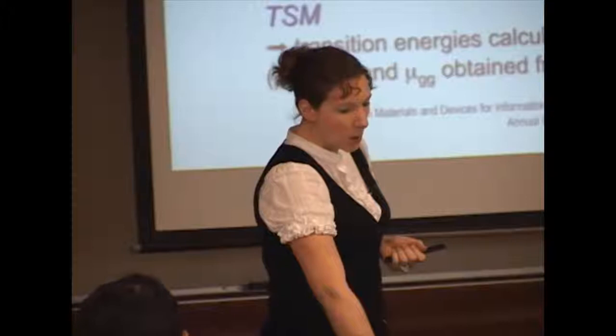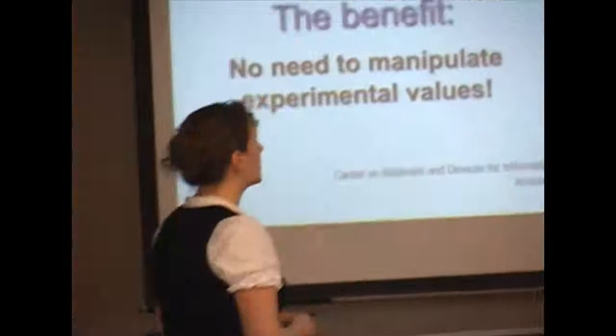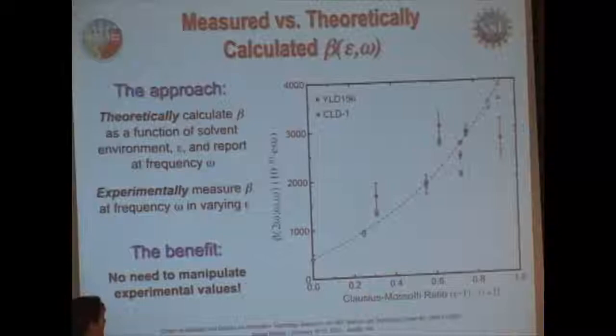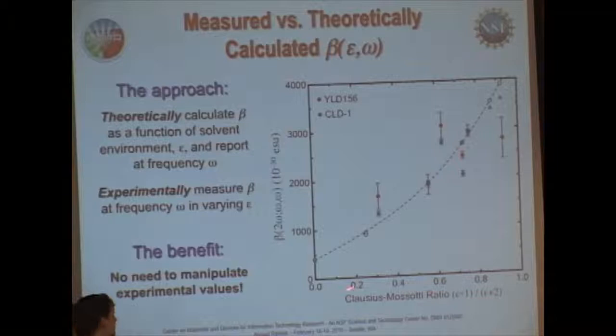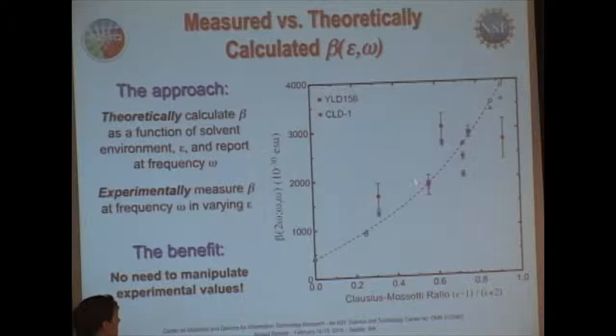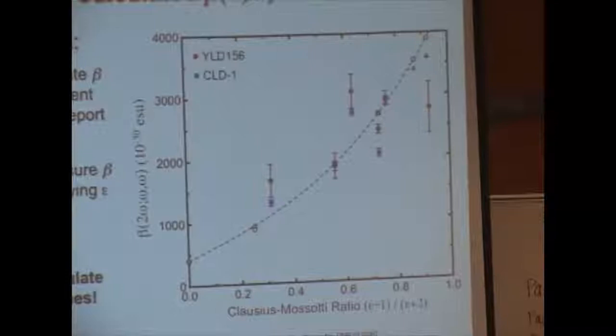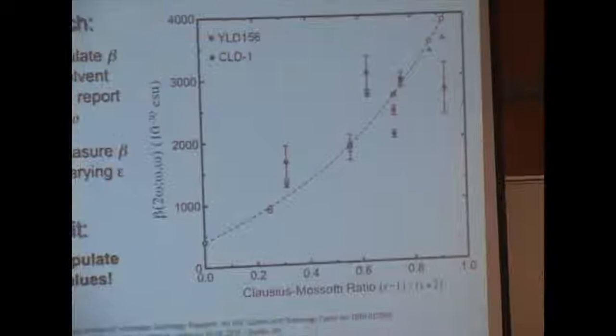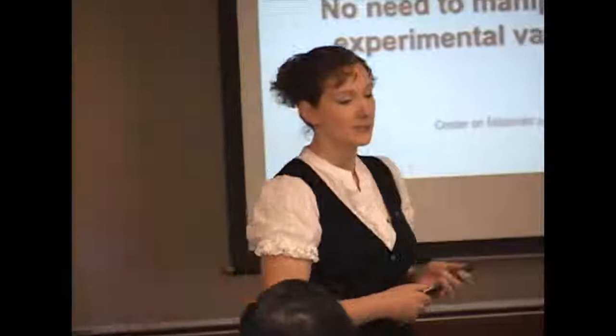Ultimately, what we want to do is be able to directly compare measured values to those that are theoretically predicted. Well, measured values of course have a dielectric dependence and also a frequency dependence. So what you see here is just that. You have calculated values shown in the black as a function of your dielectric and your hyperpolarizability. Measured values are all the colored points up there for the two systems. Important thing to note here is that no manipulation is actually done to the experimental values. So you're taking theory at a specific dielectric environment, solvent environment, and also at a specific frequency and relating the two.